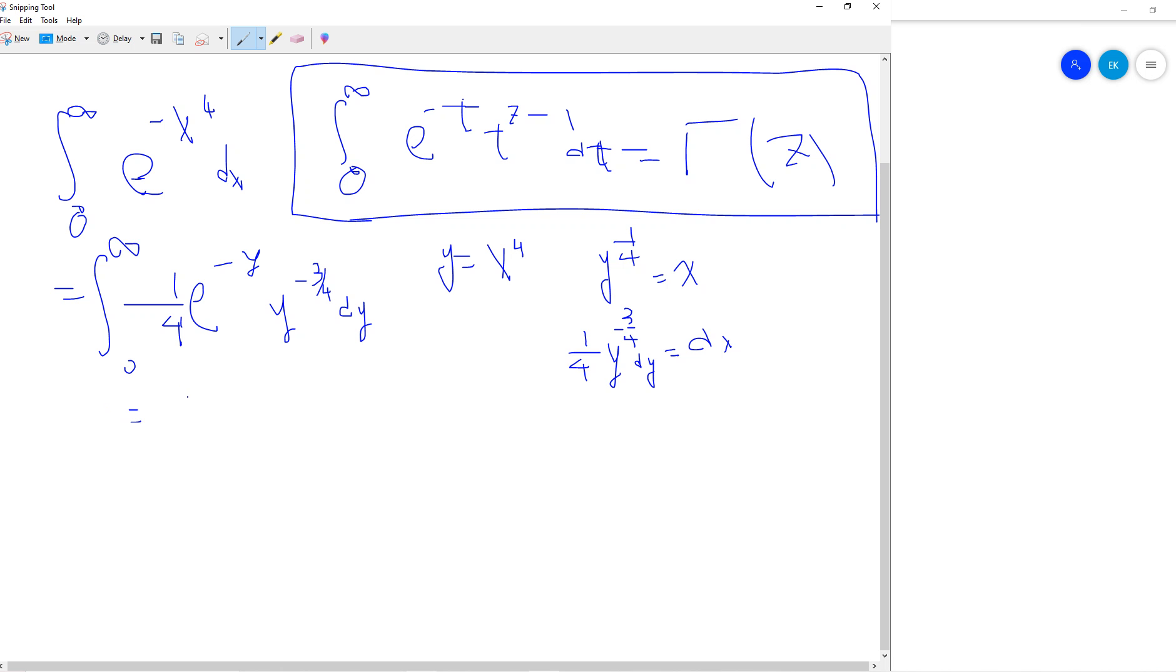So this is 1 over fourth, 0 to infinity, exponential negative y, y to the minus 3 over fourth dy.